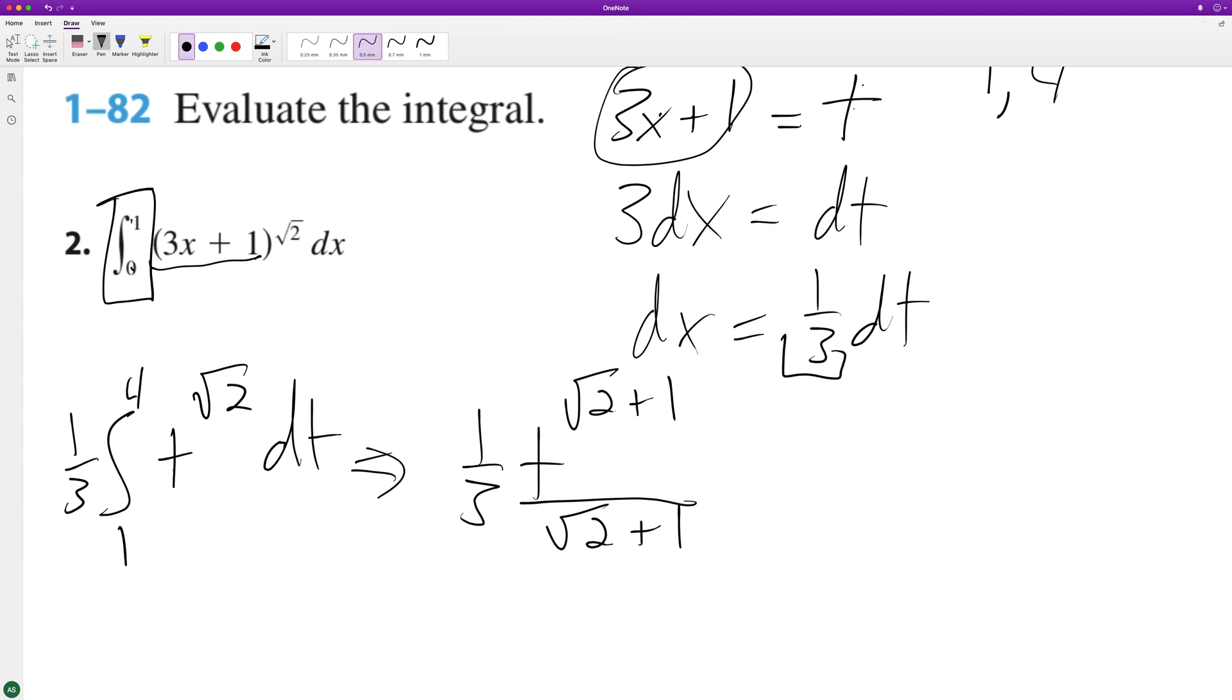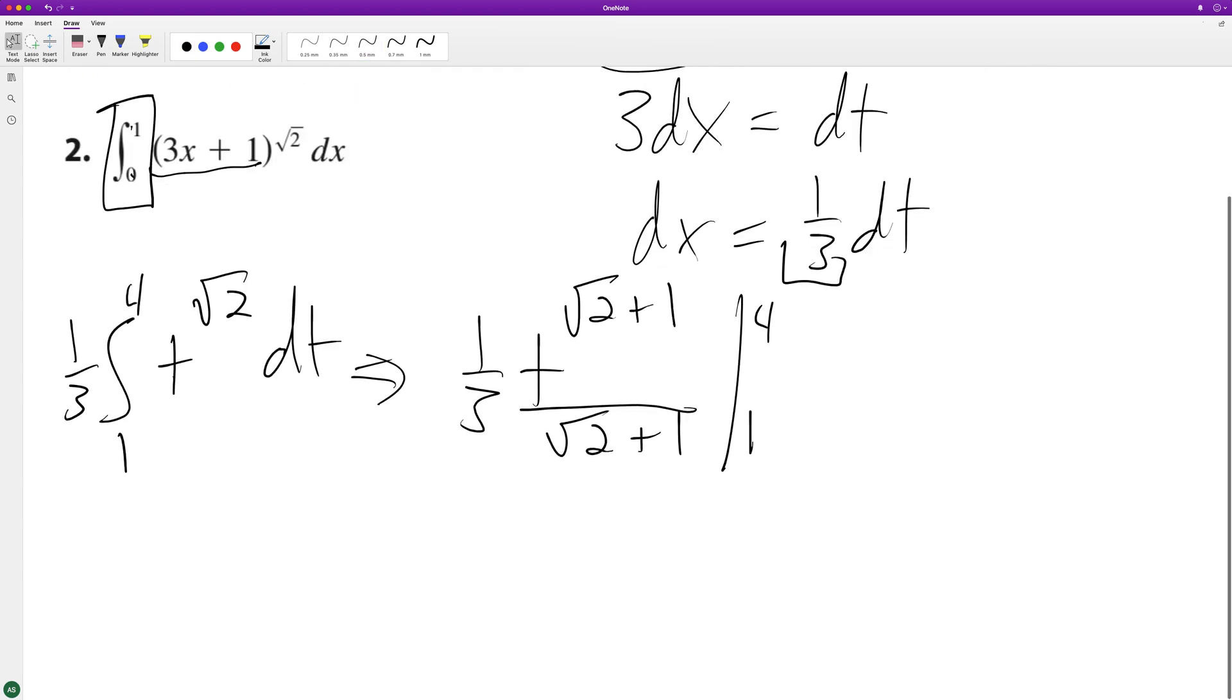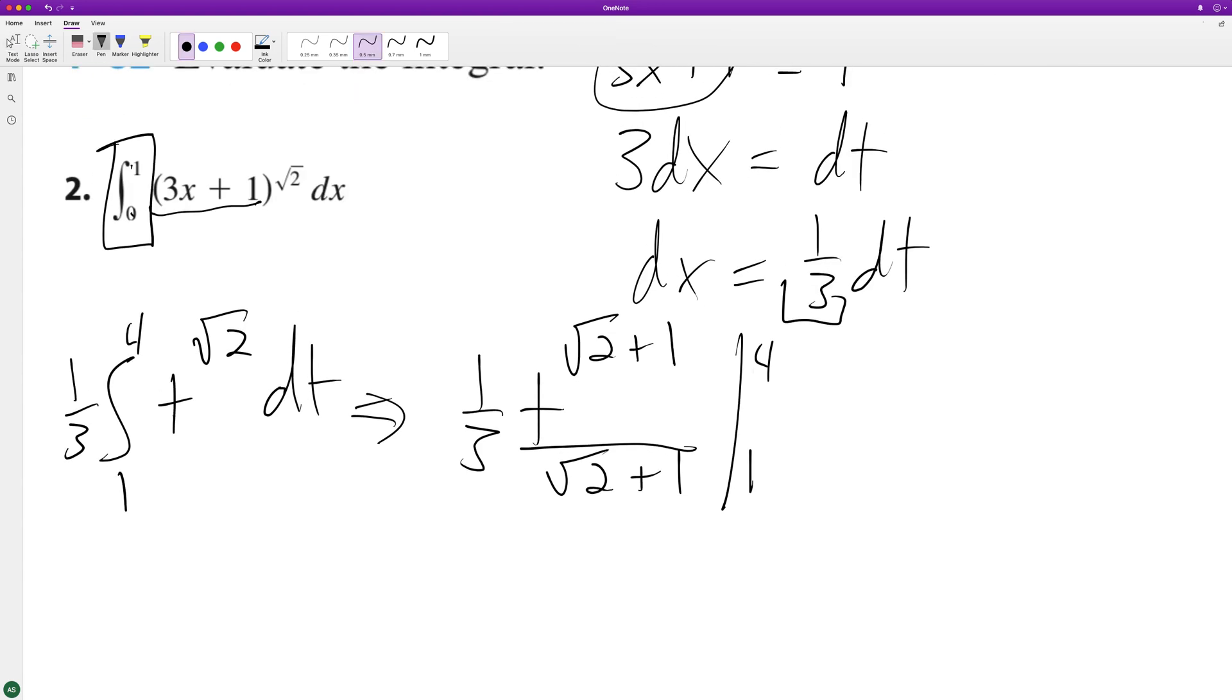Now we evaluate this from 1 to 4. Simplifying the denominator, we get 3 times the square root of 2 plus 1, and we have t raised to the square root of 2 plus 1.